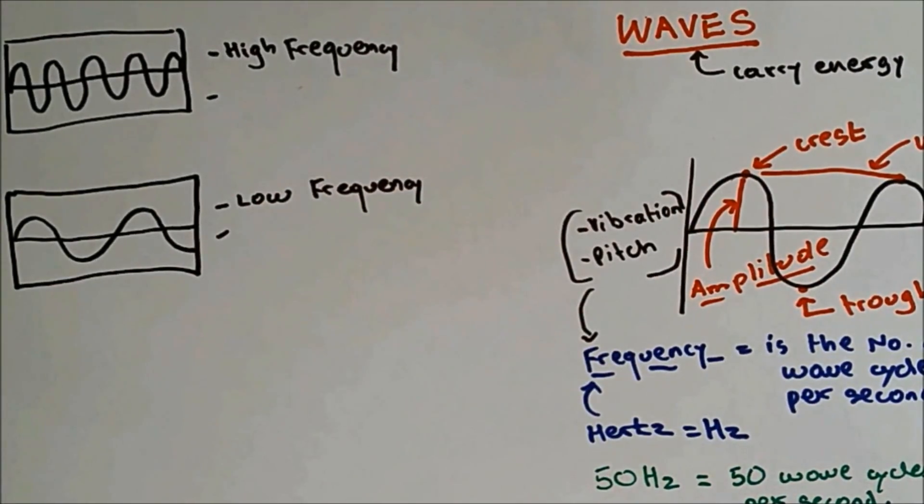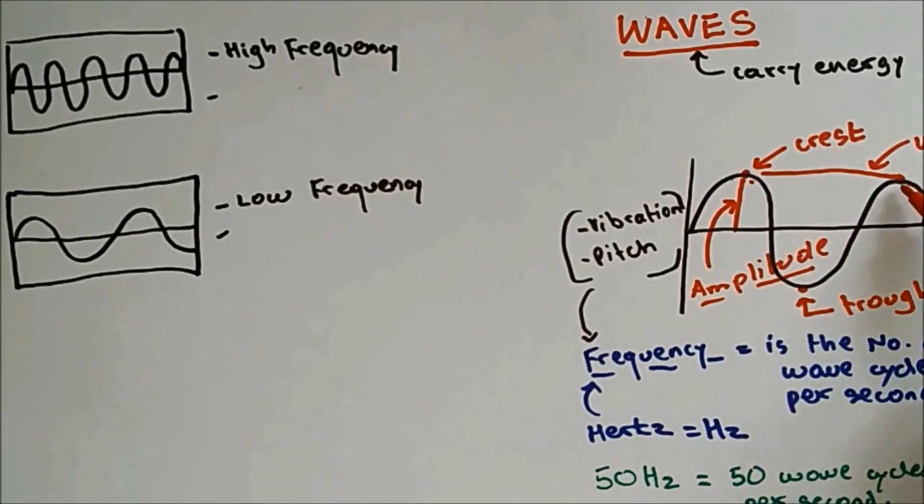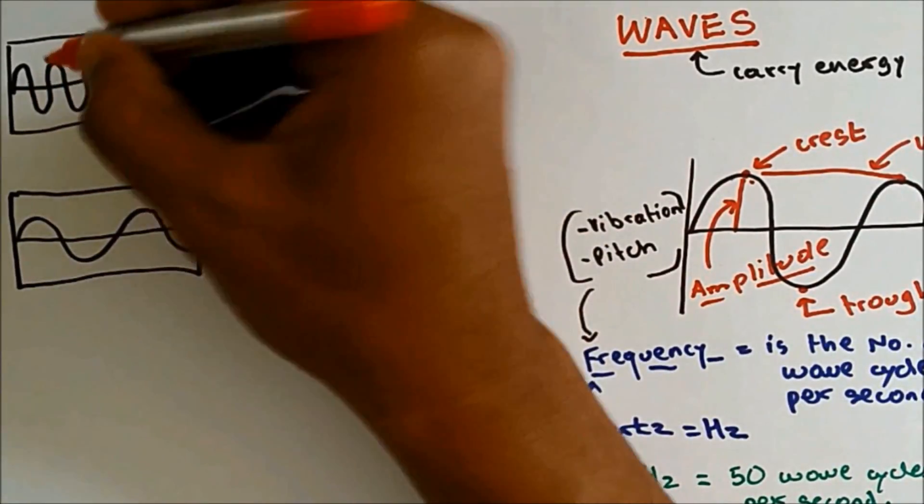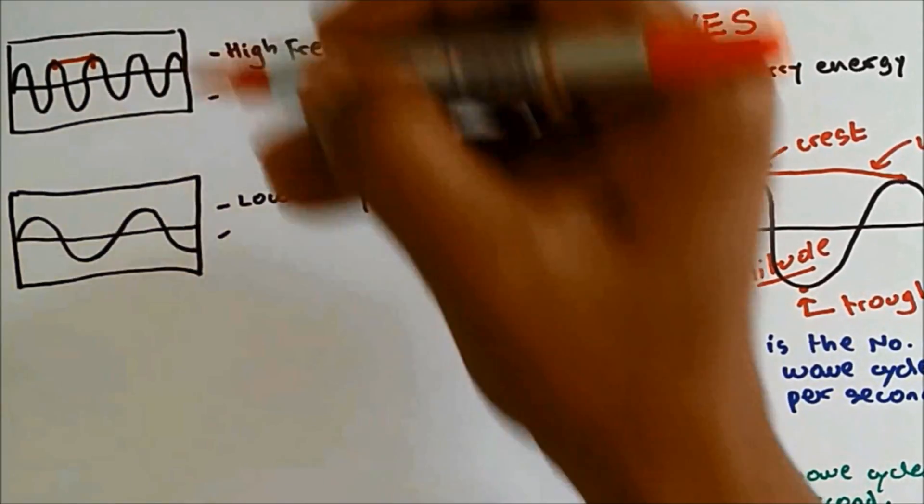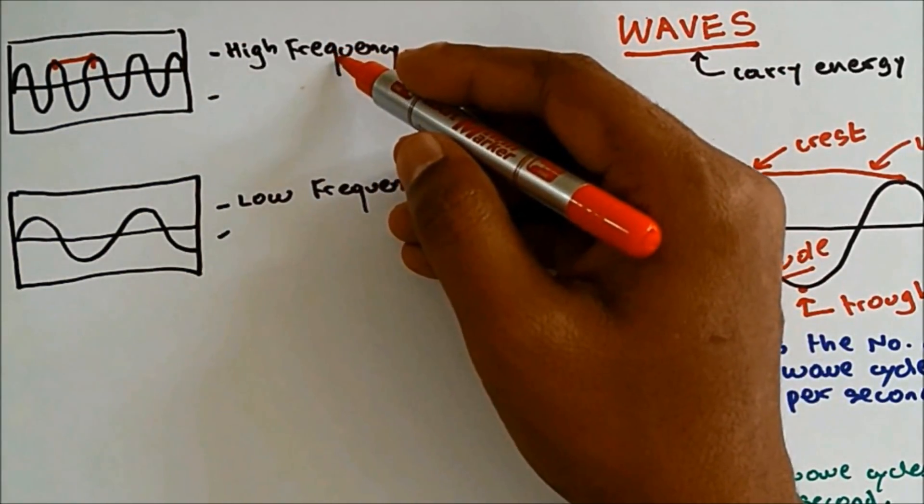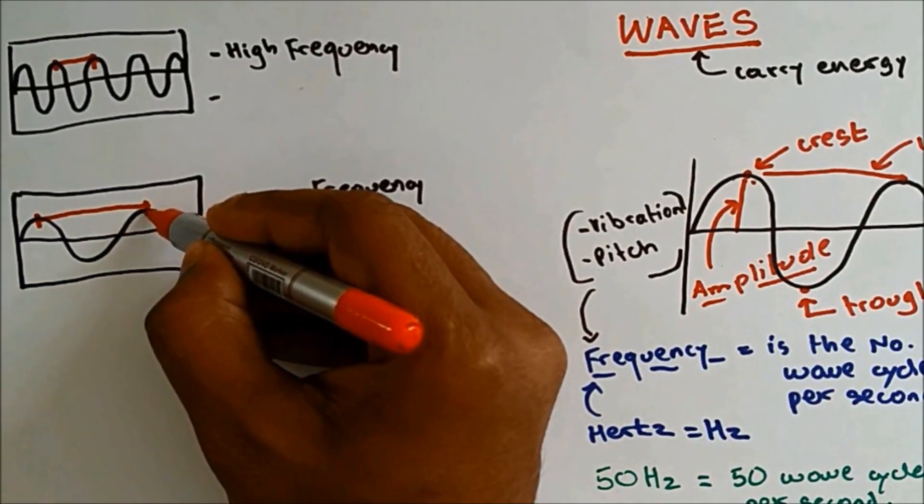Now if I ask you to measure the length of the wavelength, we learn that wavelength is from the crest to the crest. For the high frequency it's from here to here. And for low frequency, it's from here up to here.